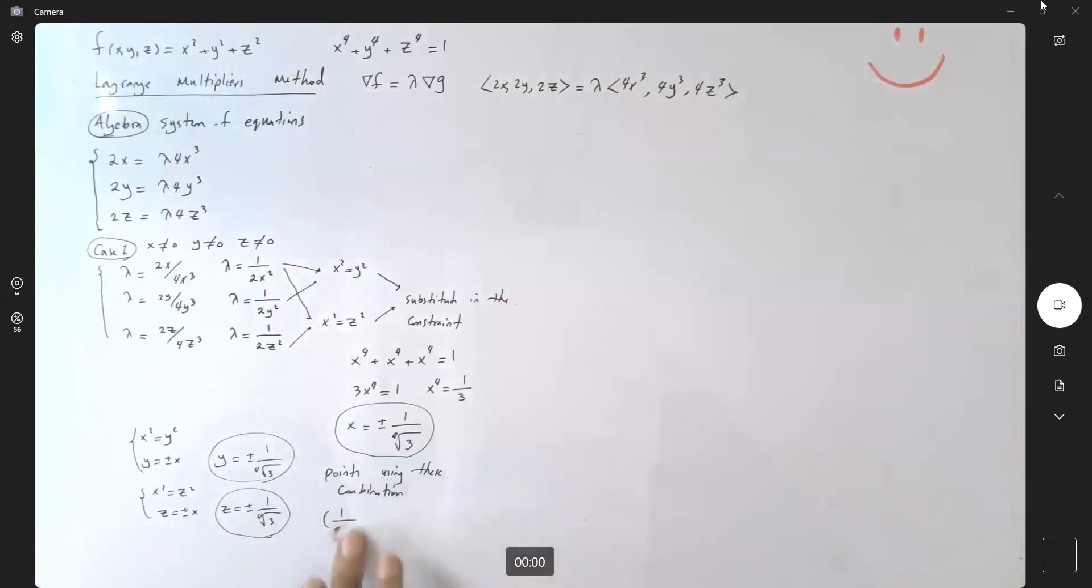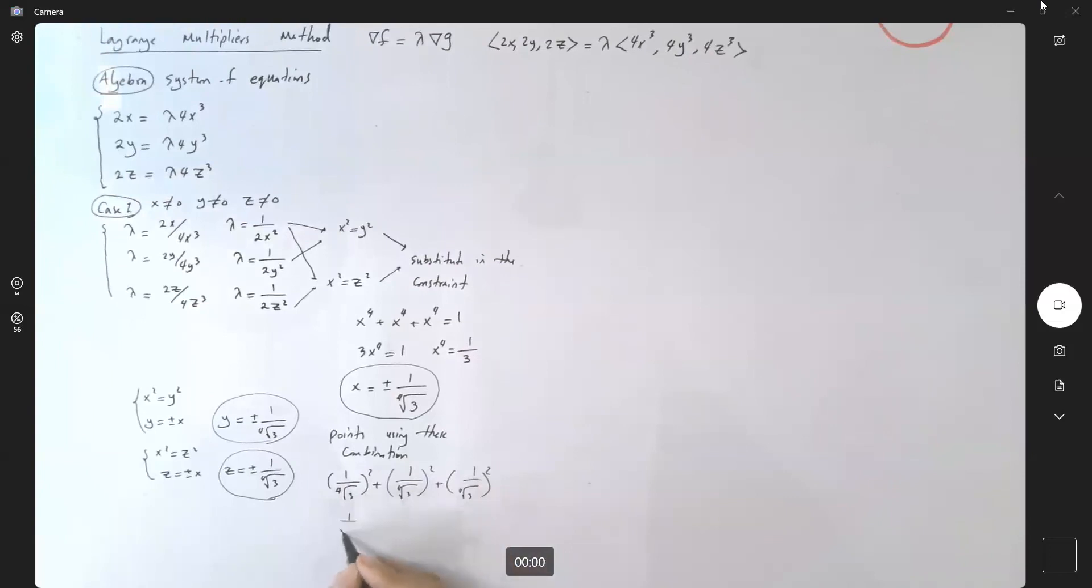So you can compute (1/∜3)² + (1/∜3)² + (1/∜3)² = 1/√3 + 1/√3 + 1/√3 = 3/√3. If you rationalize this and cancel, it becomes √3.